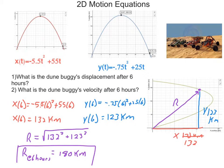So if I'm looking for the velocity after six hours, I don't have equations for the velocity. Instead, I have an x-position equation and a y-position equation. I need an x-velocity equation and a y-velocity equation, meaning I need to take the derivative of both of those.